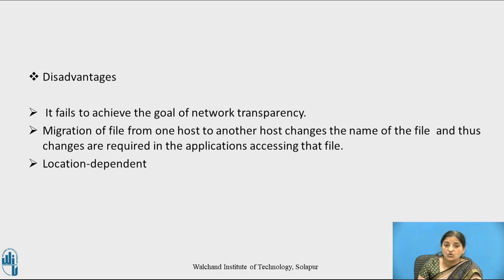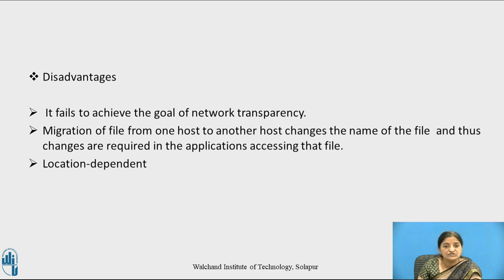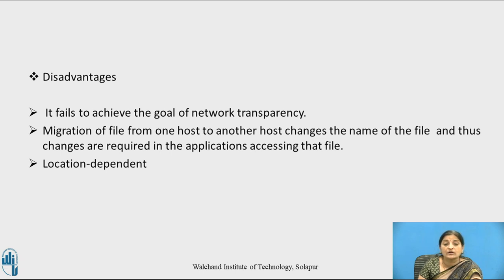Migration of a file from one host to another host changes the name of the file, and thus changes are required in the applications that access this file. Because we are concatenating the IP address of the machine on which the file resides, if the file is migrated to another machine, its name will change, and the applications that access this file also need to be updated. This approach is location dependent, whereas in distributed systems, all resources should have location-independent names to achieve network transparency.